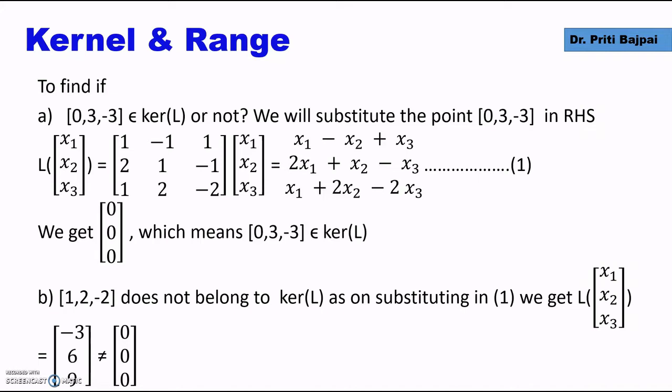The right-hand side equals (x₁ - x₂ + x₃, 2x₁ + x₂ - x₃, x₁ + 2x₂ - 2x₃). If we substitute the point (0, 3, -3) and it becomes (0, 0, 0), we confirm the point belongs to the kernel. In our case, we get (0, 0, 0), so the point belongs to the kernel.